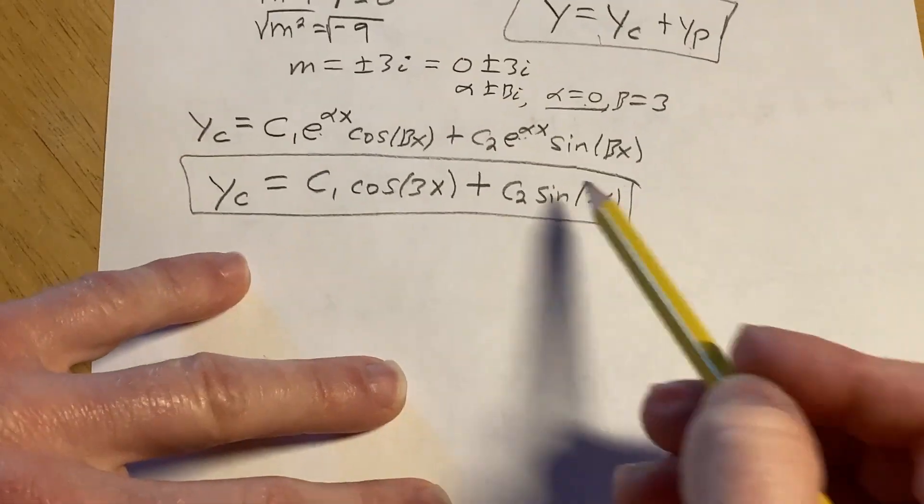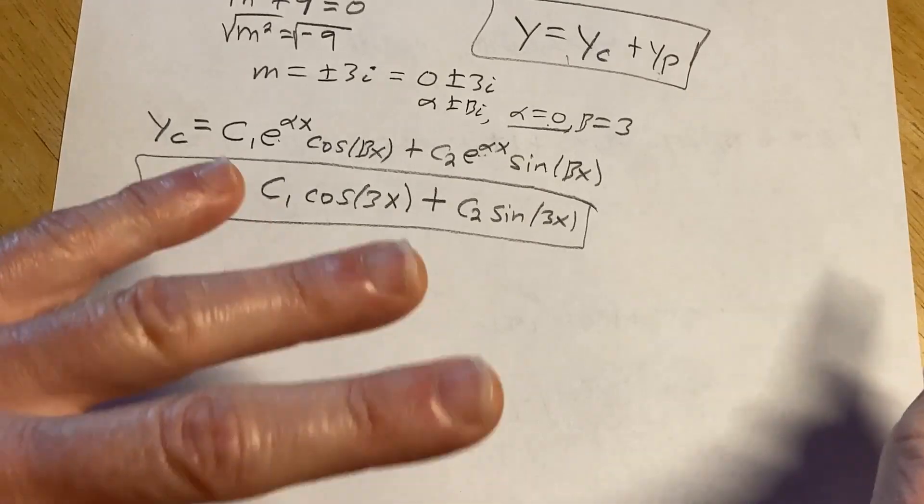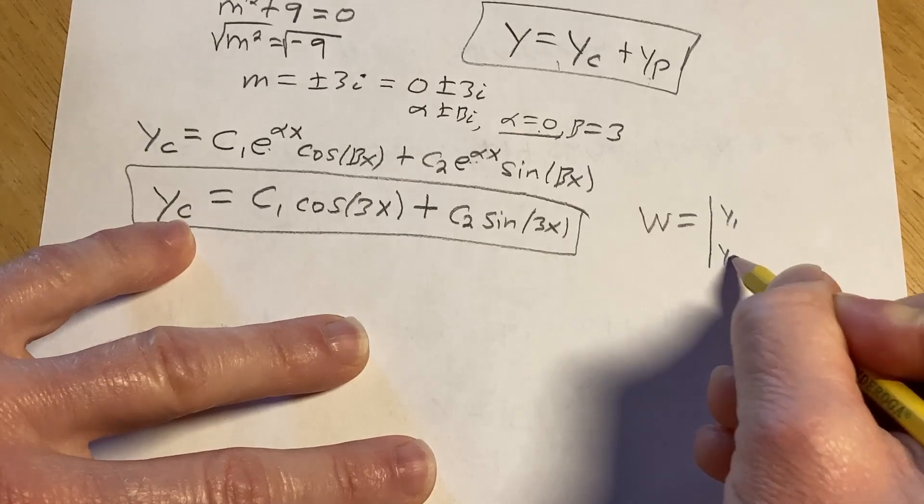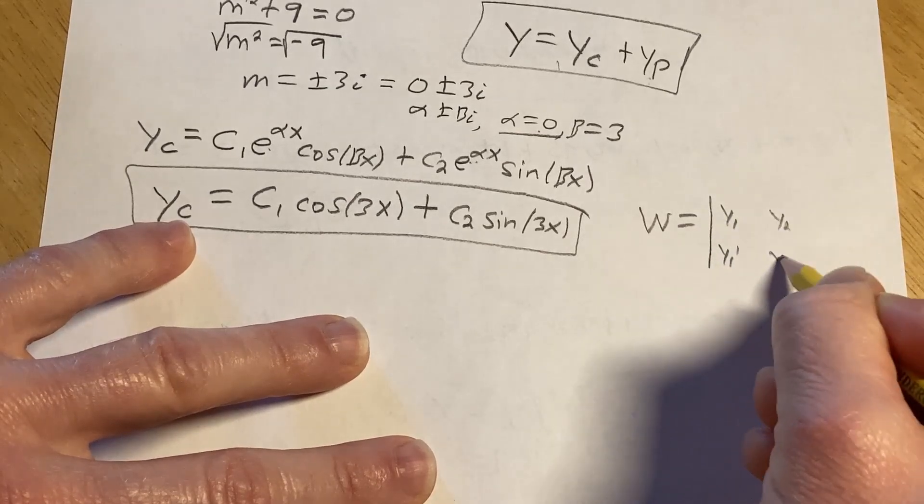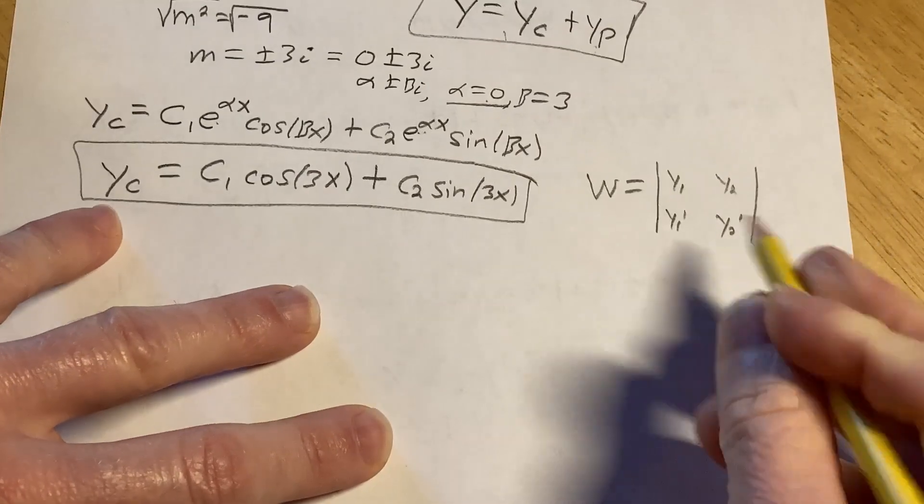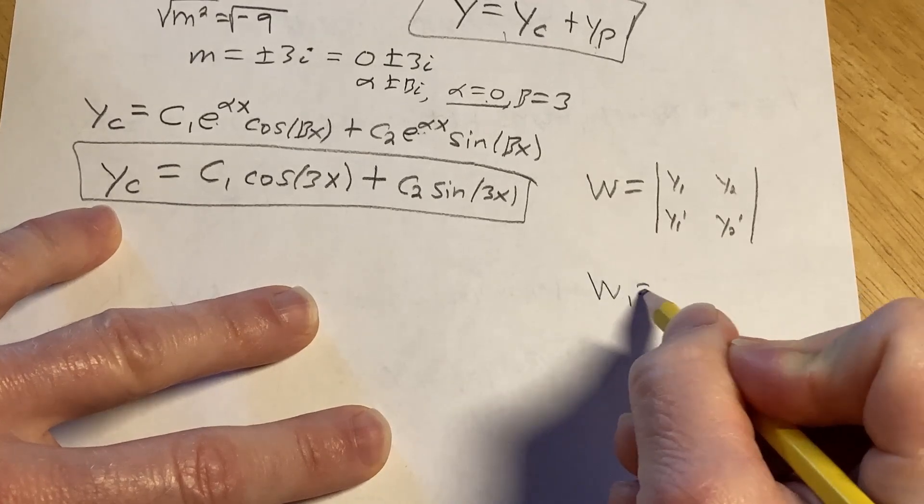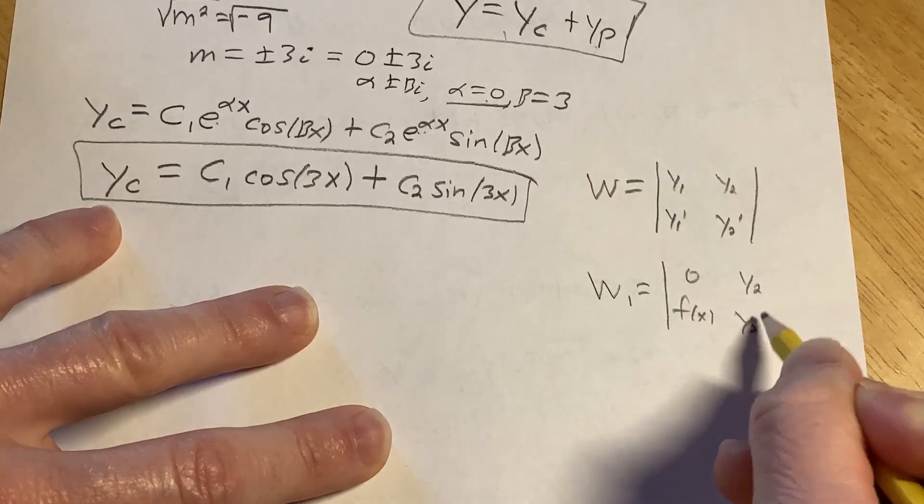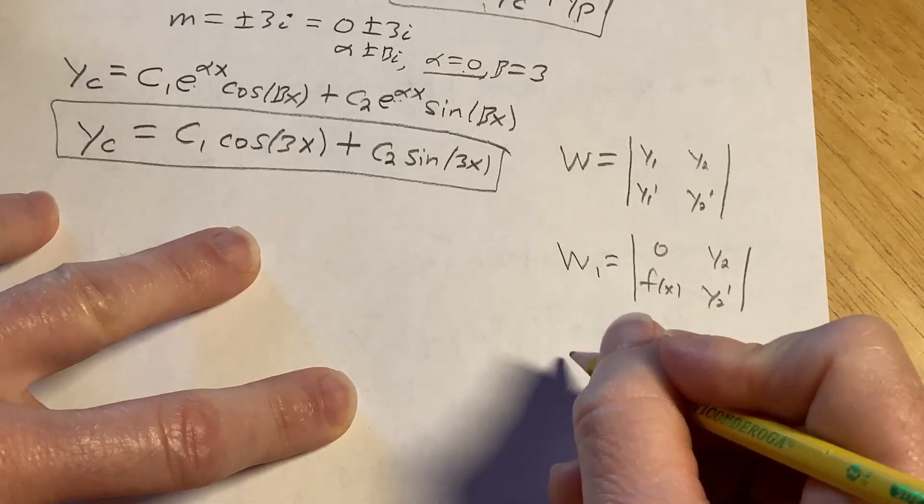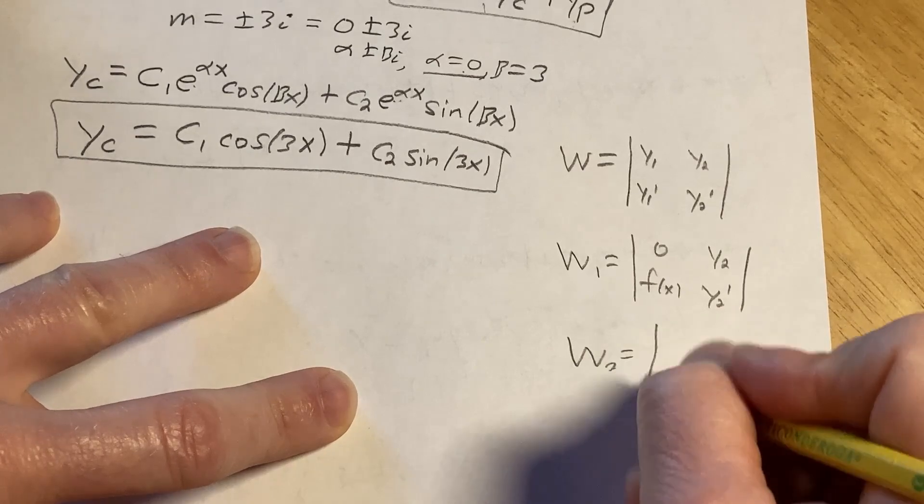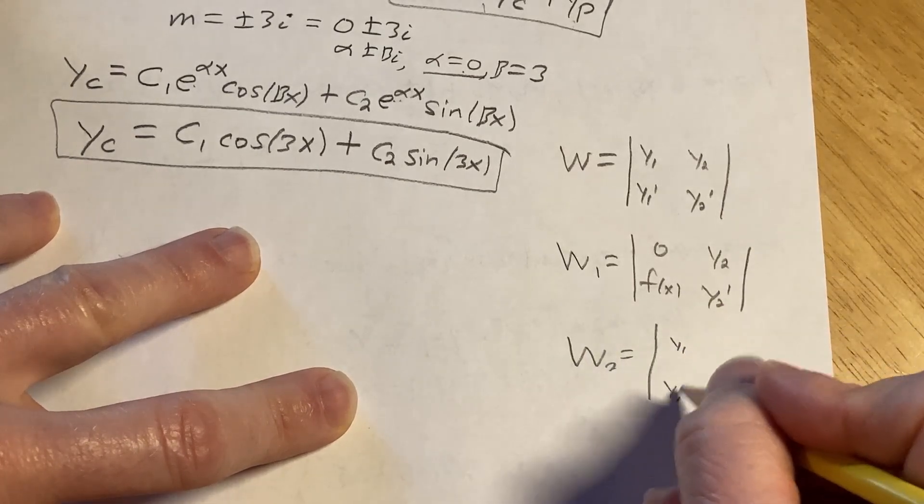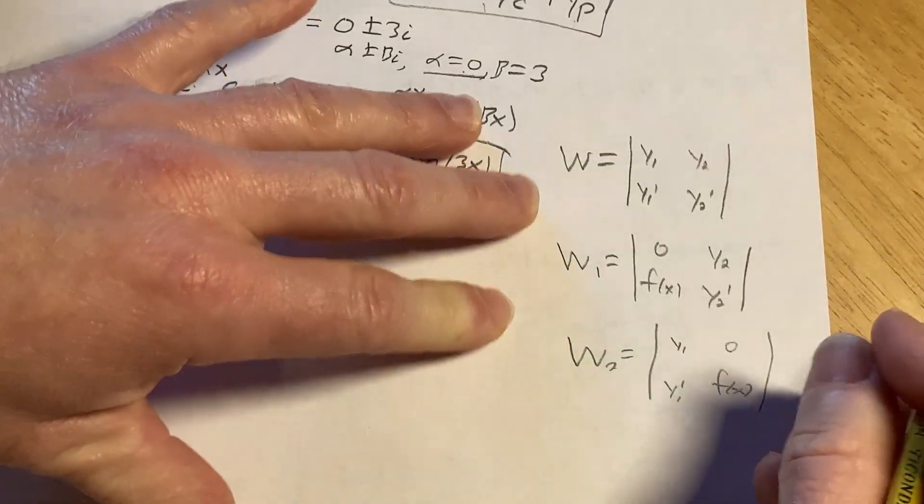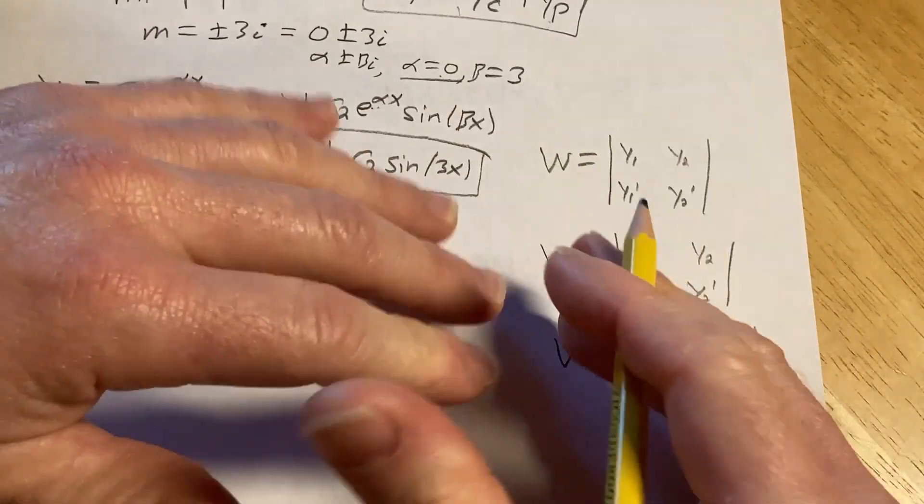The final answer is going to be y equals y sub c plus y sub p. Y sub c is called the complementary function. Y sub p is called the particular solution. Now we're going to work on that. To find the particular solution, we need to compute some determinants. We need to compute w, which is y sub 1, y sub 1 prime, y sub 2, y sub 2 prime. We have to compute w sub 1 and w sub 2. You might say, what are all these things? Well, these are just some of the formulas we're going to be using.